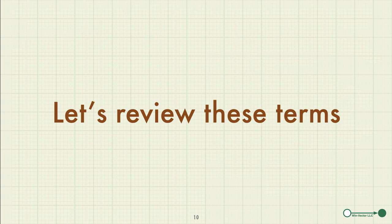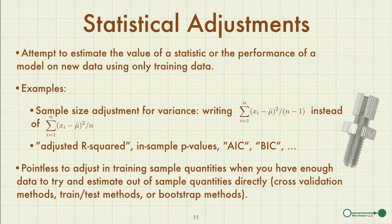A statistical adjustment is an attempt to estimate the value of a statistic or performance of a model on new data using only facts from training data. For example, the sample size adjustment for a variance estimate is dividing by the sample size minus 1 instead of the sample size when averaging squared differences. Similar quantities include adjusted R-squared, in-sample p-values, and the AIC and BIC criteria. My position is it's pointless to adjust in-training sample quantities when you have enough data to estimate these quantities out-of-sample using cross-validation methods, test-train splits, or bootstrapping methods.